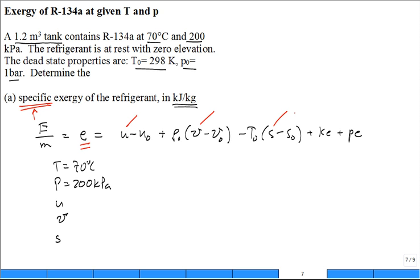Can I get v? Can I get s? Because I need the u, I need the v, and I need the s. Likewise, I know that I have the dead state temperature 298 Kelvin. It may be listed as 25 degrees C—is that the same temperature? 298, 25°C? Thumbs up if you agree.